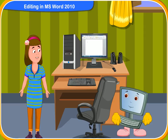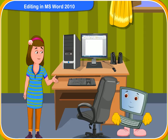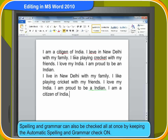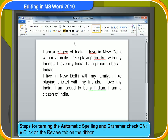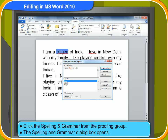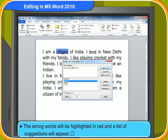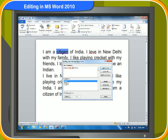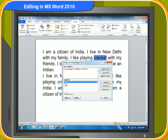What are the steps for turning the automatic spelling and grammar check on? First, click on the Review tab on the ribbon. Click Spelling and Grammar from the Proofing group. The Spelling and Grammar dialog box opens. The wrong words will be highlighted in red and a list of suggestions will appear. You can choose the required words from the list and click the Change button to replace the existing text.